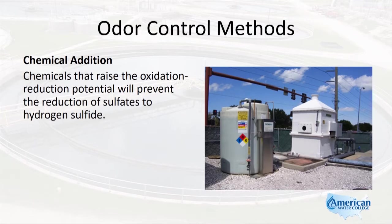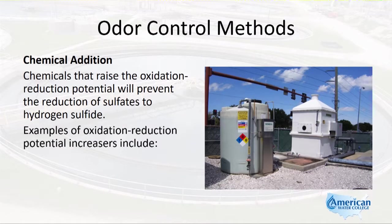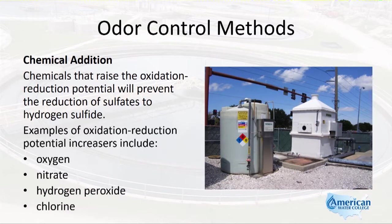Chemicals that raise the oxidation reduction potential will prevent the reduction of sulfates to hydrogen sulfide. Examples of oxidation reduction potential increasers include oxygen, nitrate, hydrogen peroxide, and chlorine.